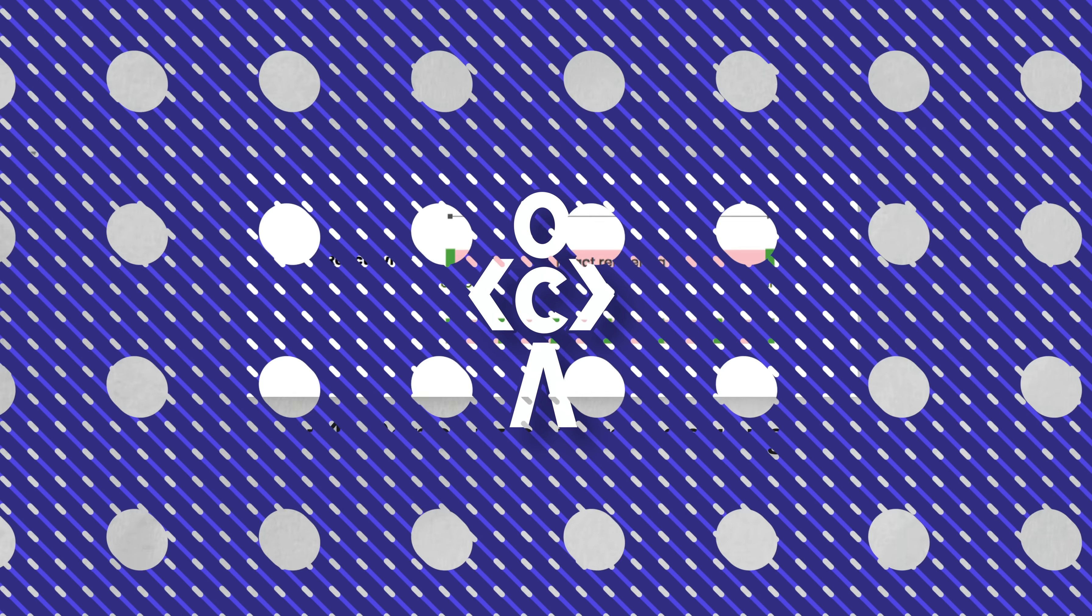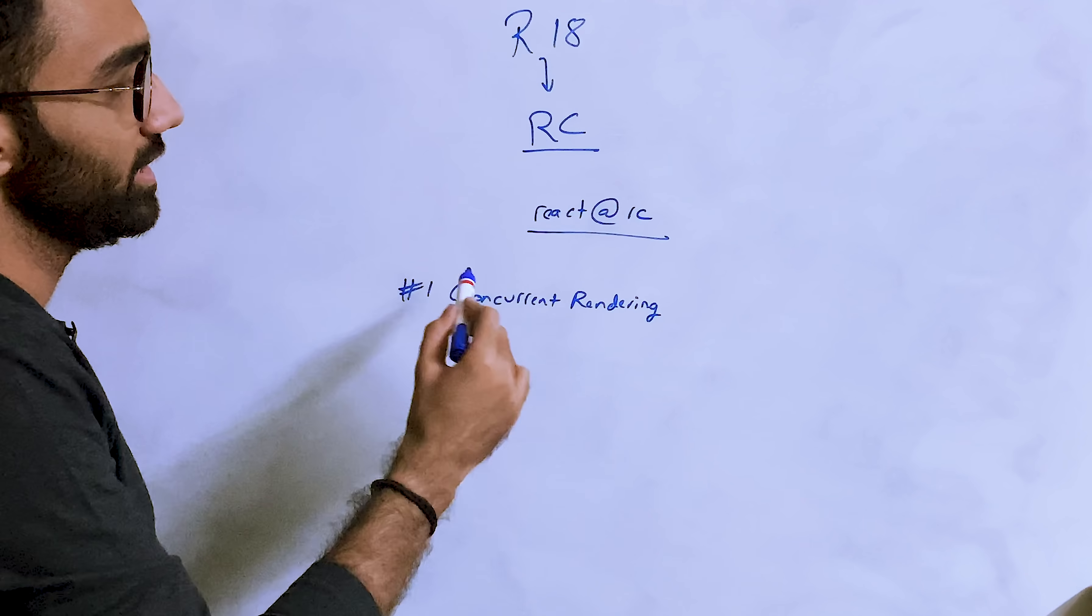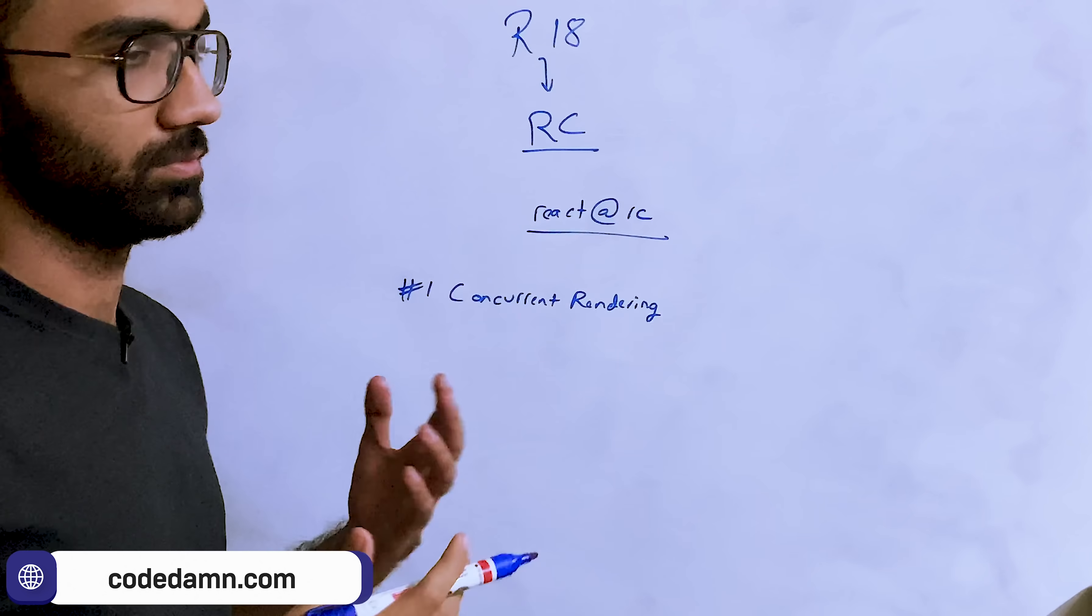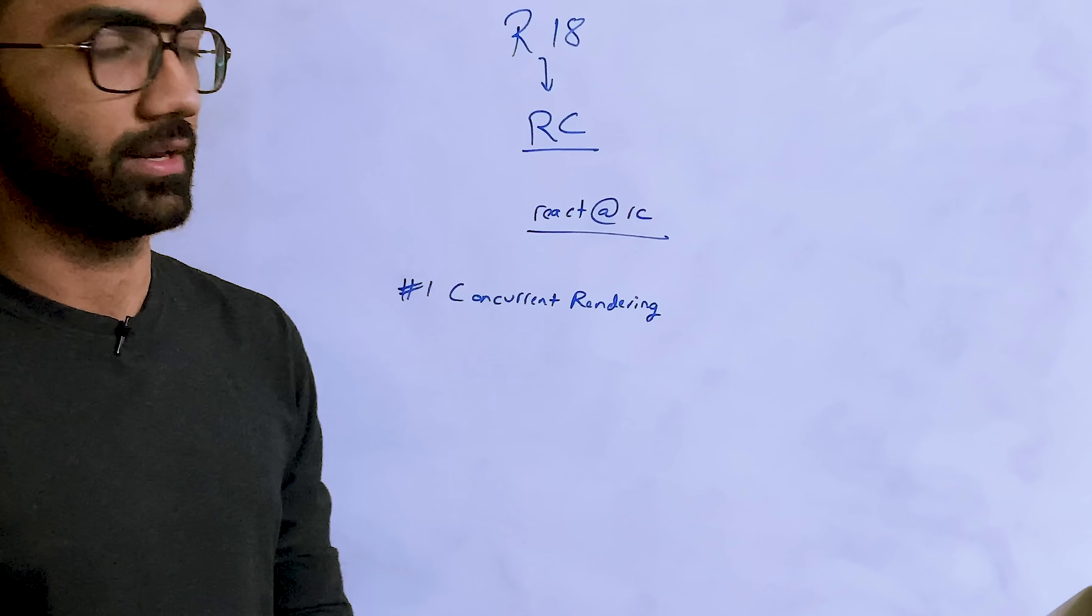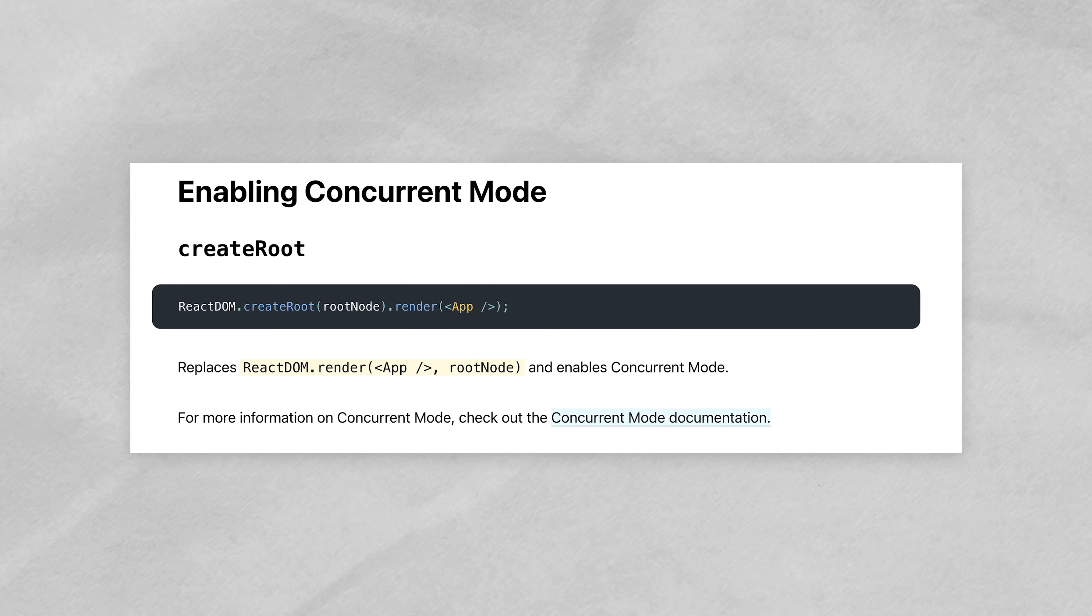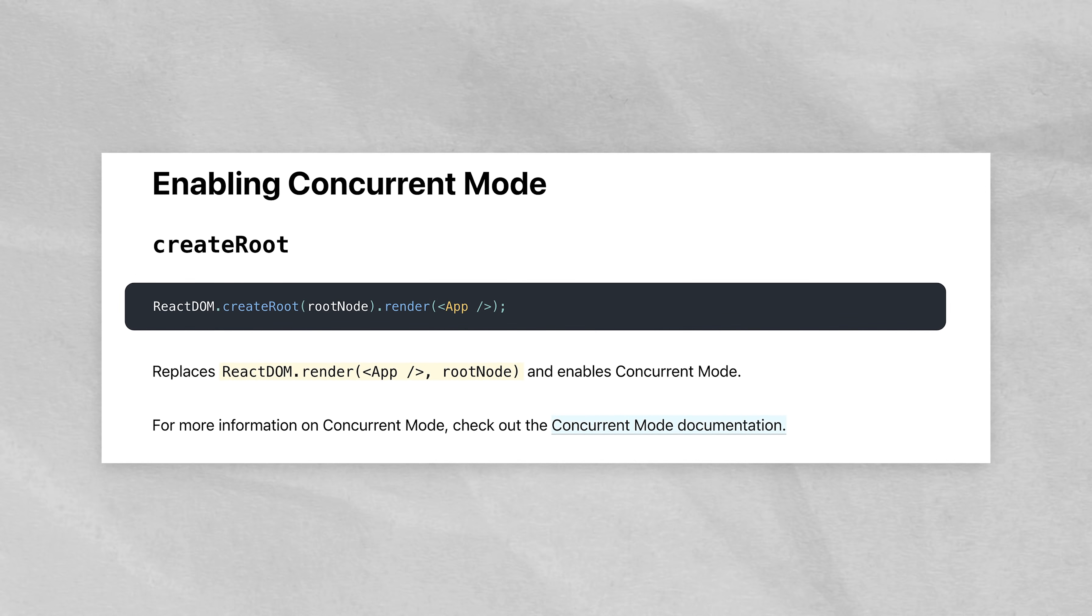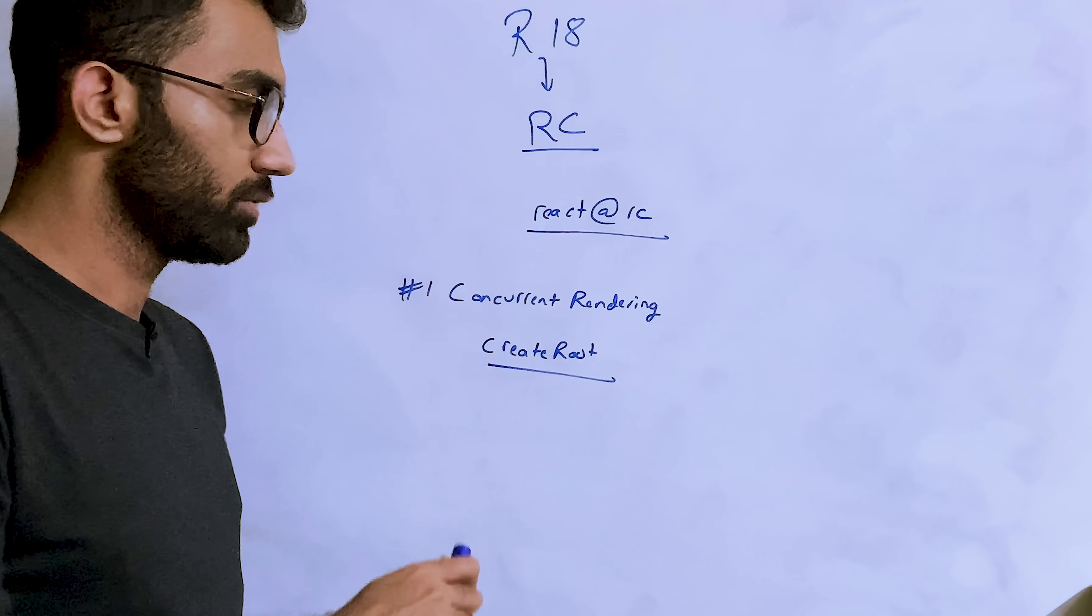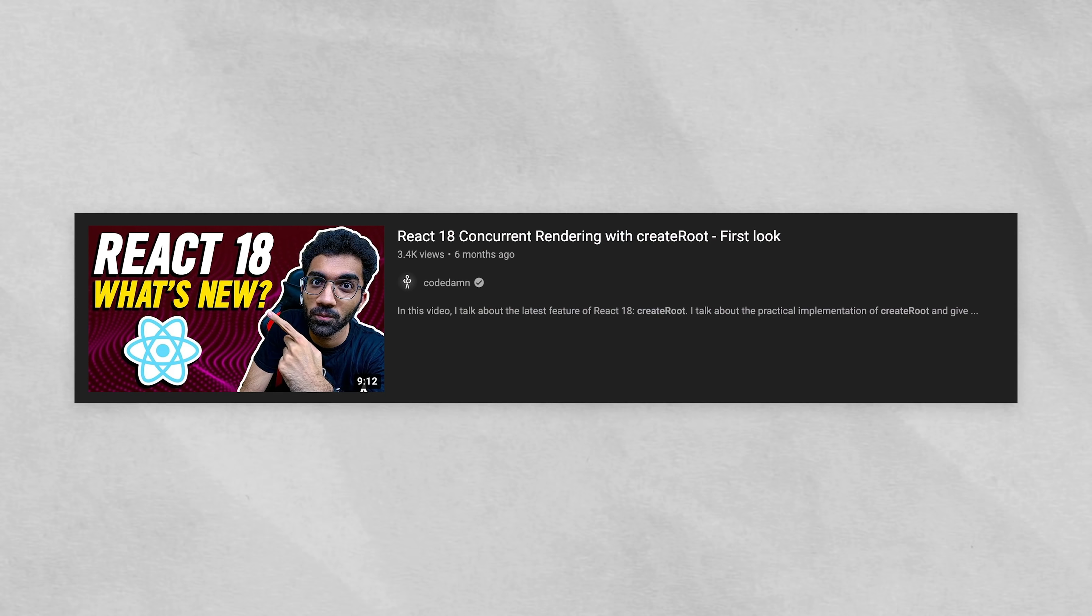The biggest thing React 18 brings is concurrent rendering. This had been renamed from concurrent mode to concurrent rendering so there's not a breaking versus non-breaking mode in React. Now this is just concurrent rendering where React would try to render stuff concurrently whenever you are using react.createRoot instead of the traditional react dom.render. We have discussed extensively what createRoot is and how it differs from react dom.render in some previous videos.